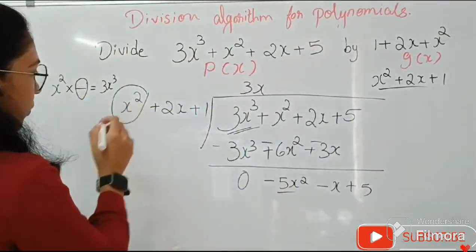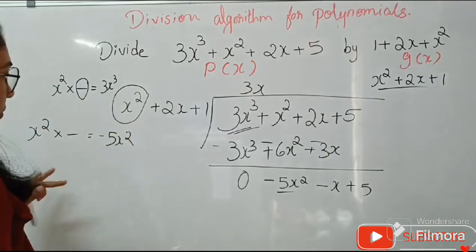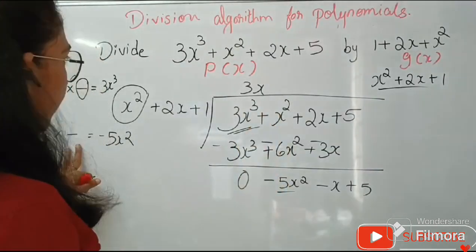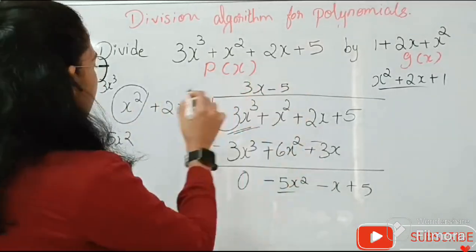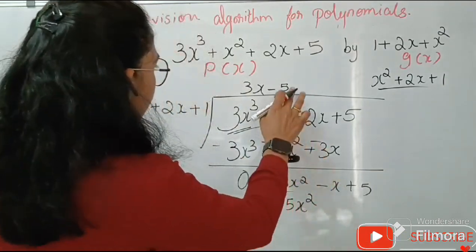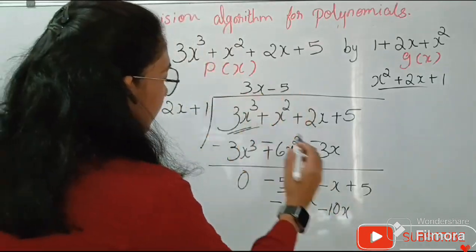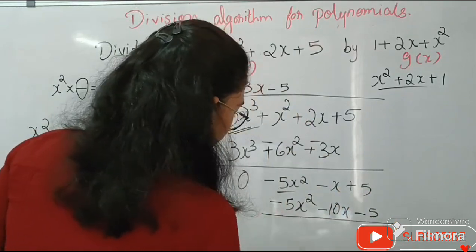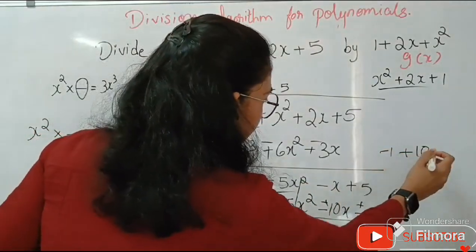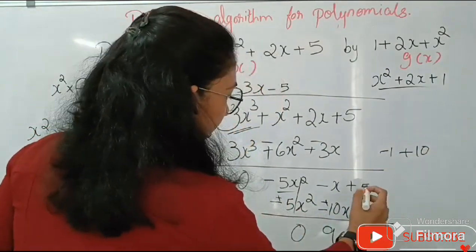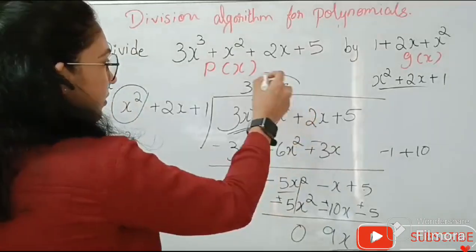Next, taking minus 5X squared: X squared multiplied by a term gives minus 5X squared, so that term is minus 5. Multiplying minus 5 by each term: minus 5 times X squared is minus 5X squared, minus 5 times 2X gives minus 10X, and minus 5 times 1 is minus 5. By sign changing, minus 5X squared cancels to 0, minus X plus 10X gives 9X, and 5 plus 5 is 10. So the remainder is 9X plus 10 and the quotient is 3X minus 5.